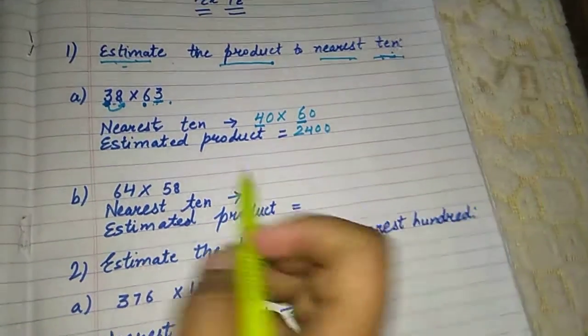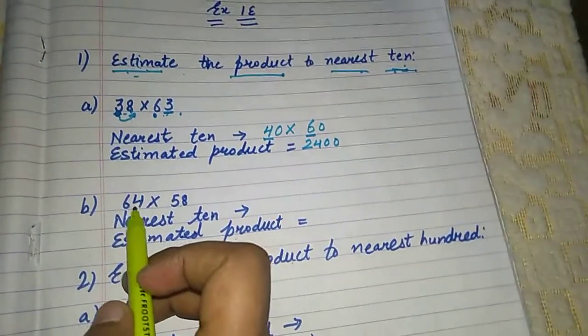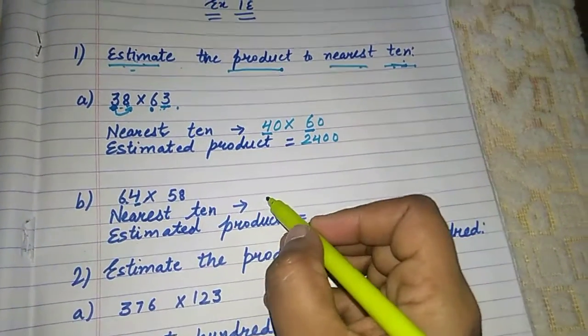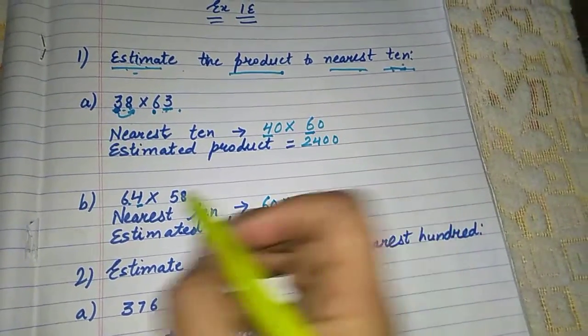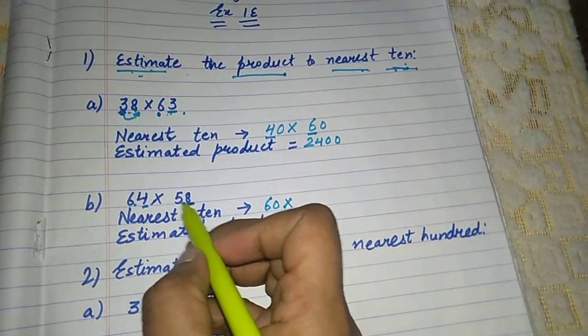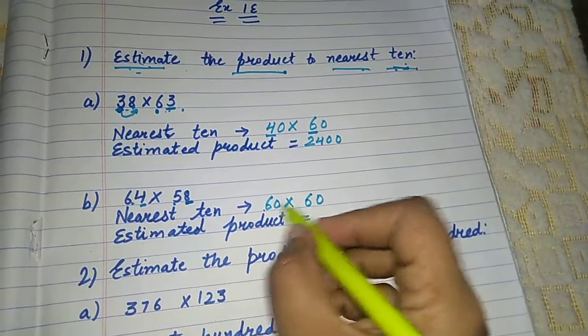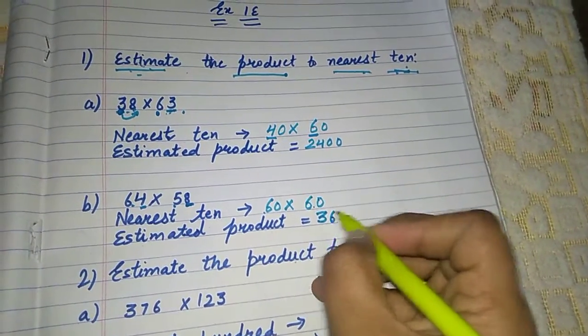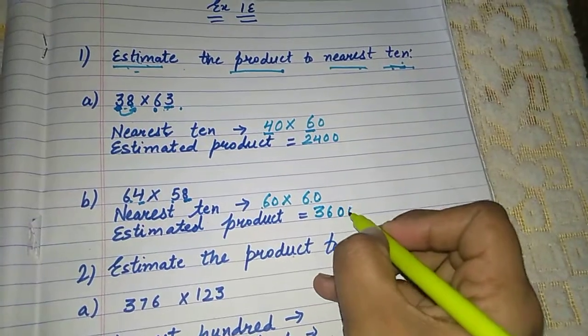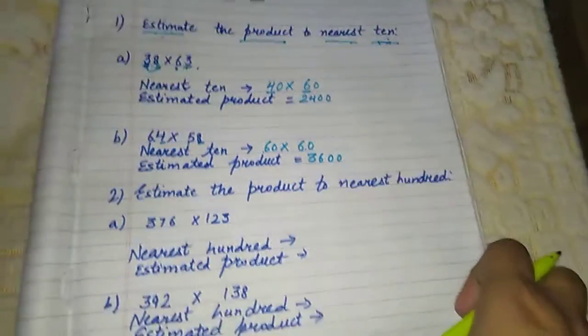Now here is a B part. It's also similar. Sixty four. Four is a weak number. Eight is a strong number. It will give one. Here is a sixty. Six six. Thirty six. How many zeros? Two zeros are here. So it is a 3600.